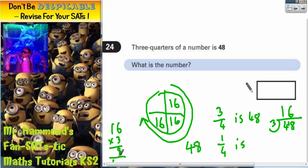Three sixes are 18, carry the one. Three ones are three, plus the one is four. So yeah, each quarter must be 16, because it makes 48.